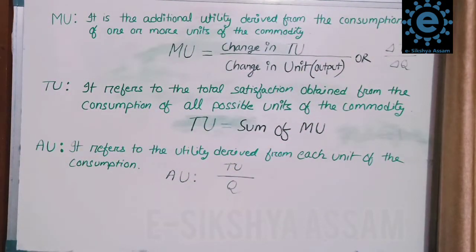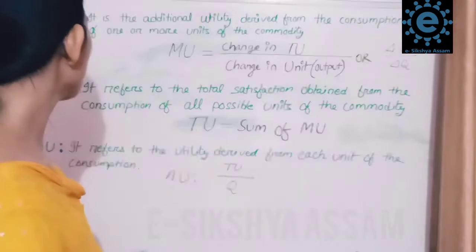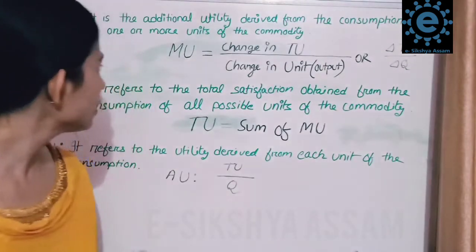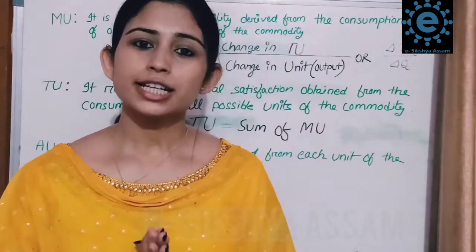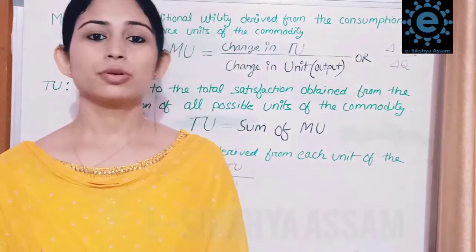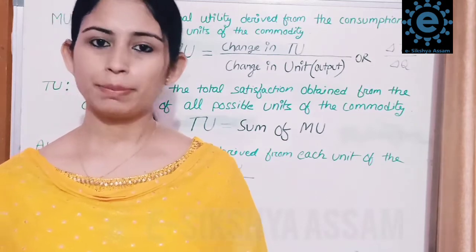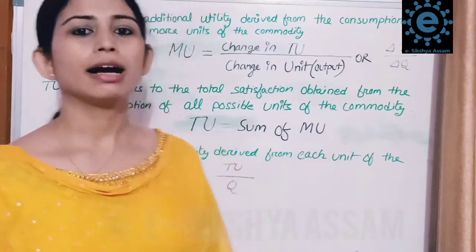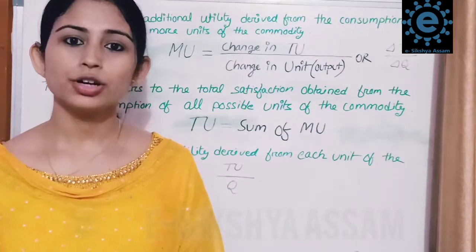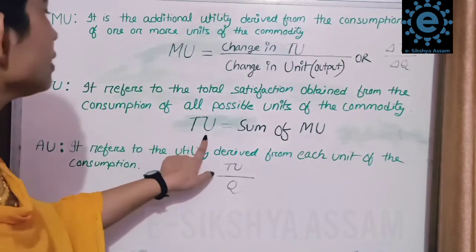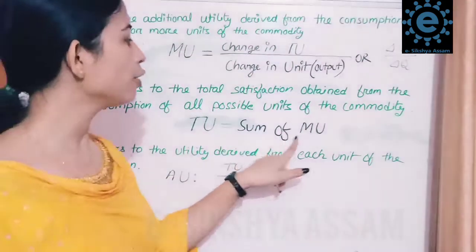Total utility refers to the total satisfaction obtained from the consumption of all possible units of a commodity. In other words, total utility is the total amount of satisfaction, and it is equal to the sum of marginal utilities.